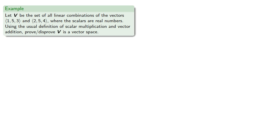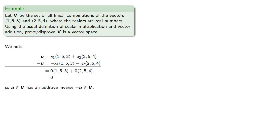How about the inverse? So again, u is a linear combination. Negative u, well let's try -x₁(1, 5, 3) - x₂(2, 5, 4). And if we add the right-hand side, we get 0(1, 5, 3) + 0(2, 5, 4), which is the zero vector. So any vector in V has an additive inverse, -u, also in V.